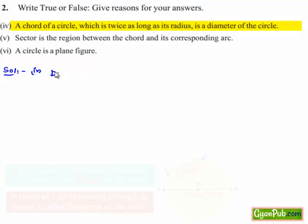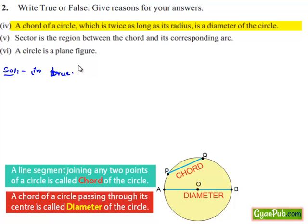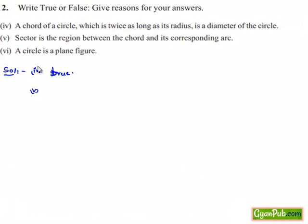That is true because we know that a chord which is passing through the center of the circle will have a length of two times the radius, therefore that will be the diameter of the circle. Now moving on to the fifth question.